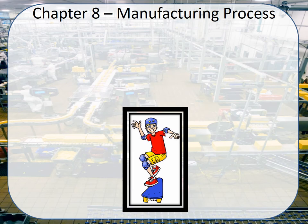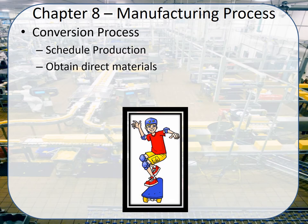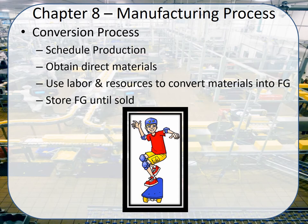Again, you went through this kind of within your paper airplane example. First thing you're doing, whether you're manufacturing computers or manufacturing skateboards, is you schedule the production — here's when you're going to do the work, you set up the timeline. Then after you've got the timeline set, you make sure you've got all the direct materials in front of you ready to work on. From that point on you use your labor and your resources in order to convert that raw material into finished goods. In the end, finished goods is the goal, and then you store those finished goods somewhere until you sell them.